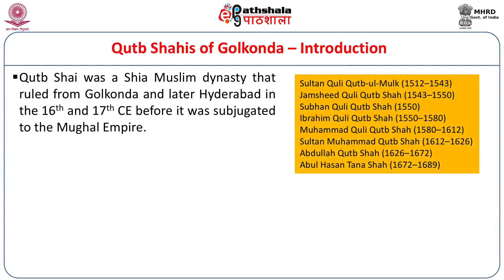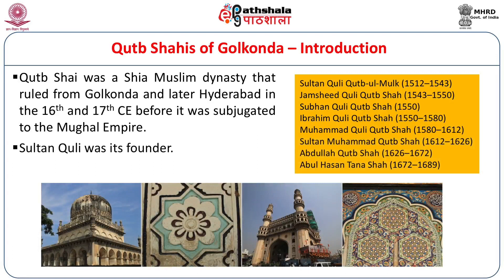The Qutub Shahis were a Shia Muslim dynasty that ruled from Golconda and later Hyderabad in the 16th and 17th century CE, before being subjugated to the Mughal empire. Sultan Kuli was its founder. There were eight kings: Sultan Kuli Qutub ul-Mulk, Jamshed Quli Qutub Shah, Subhan Quli Qutub Shah, Ibrahim Quli Qutub Shah, Muhammad Quli Qutub Shah, Sultan Muhammad Qutub Shah, Abdullah Qutub Shah, and Abul Hassan Tanasha.